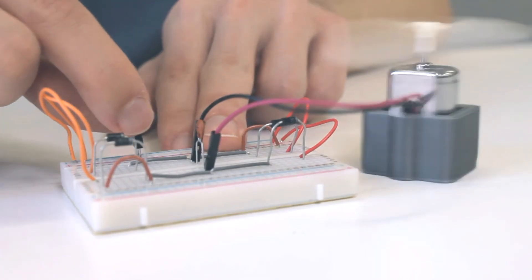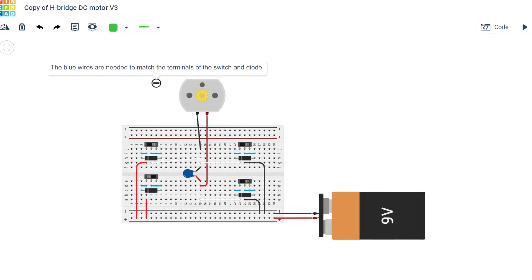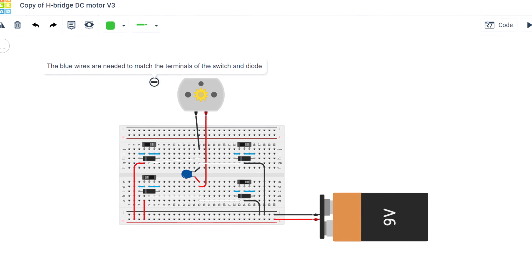A 9-volt battery is used to power the motor. You can find a TinkerCAD simulation using switches linked in the description.